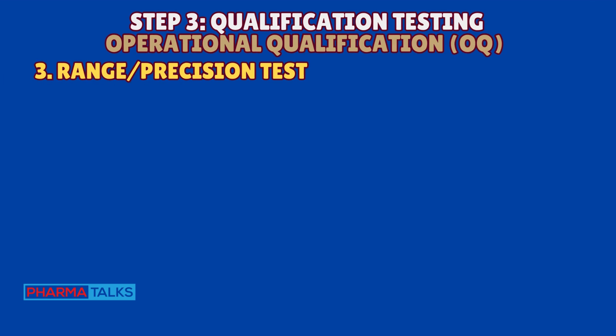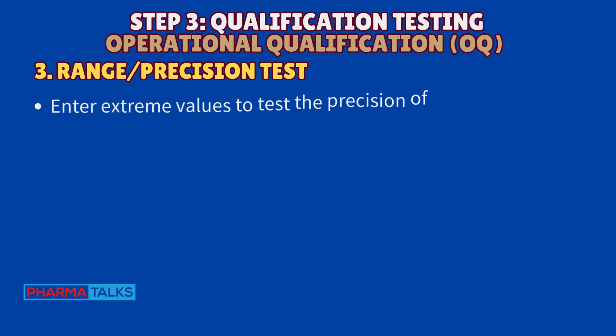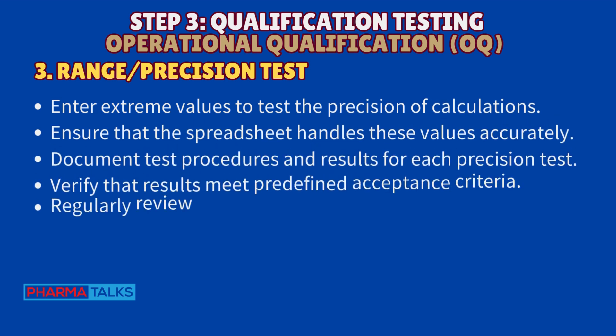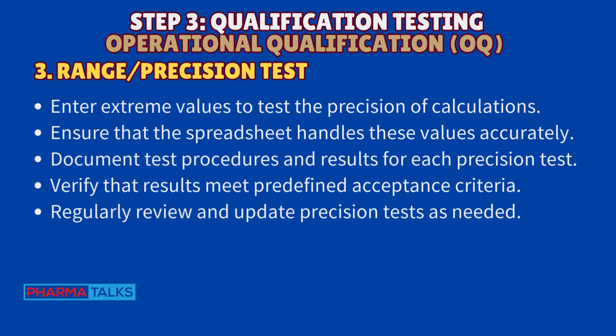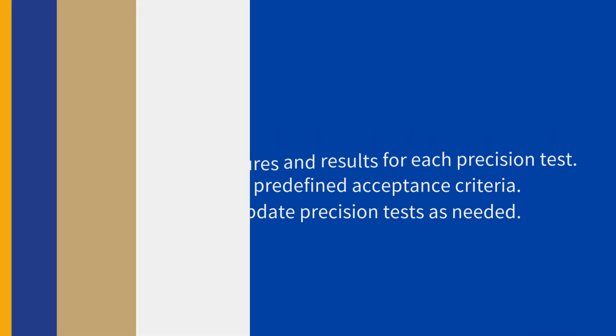Range and precision test. Enter extreme values to test the precision of calculations. Ensure that the spreadsheet handles these values accurately. Document test procedures and results for each precision test. Verify that results meet predefined acceptance criteria. Regularly review and update precision tests as needed.